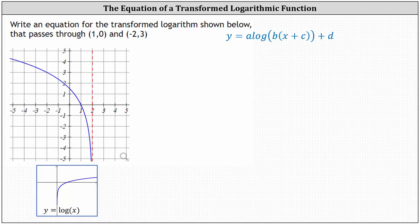Write an equation for the transformed logarithm shown below that passes through the point (1, 0) and (-2, 3). We'll build the equation using the common log function in the form y equals a times common log of the product of b and the quantity x plus c, plus d.